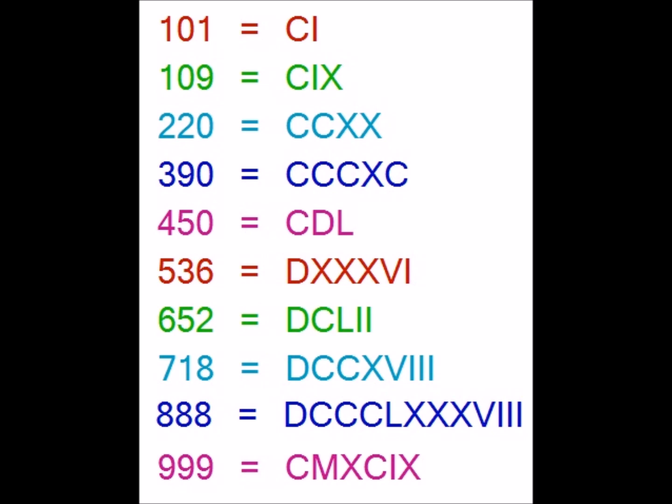For 109, we have C for 100 and append IX for 9, so CIX gives 109. For 220, we use CC for 200 and XX for 20. For 390, we have CCC for 300 and XC for 90.